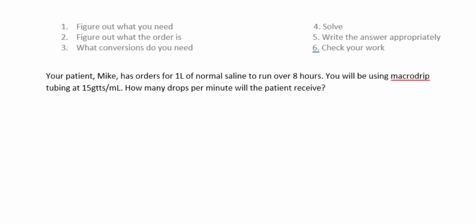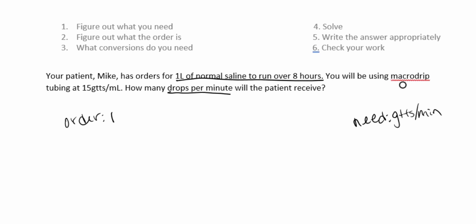Your patient Mike has an order for one liter of normal saline to run over eight hours. You will be using macro drip tubing at 15 drops per mL. How many drops per minute will the patient receive? First, what do we need? Drops per minute. Next, what is ordered? One liter over eight hours. The conversions we'll need are: macro drip tubing is 15 drops per mL, one hour equals 60 minutes, and we'll also need to convert liters to milliliters — one liter equals 1000 milliliters.